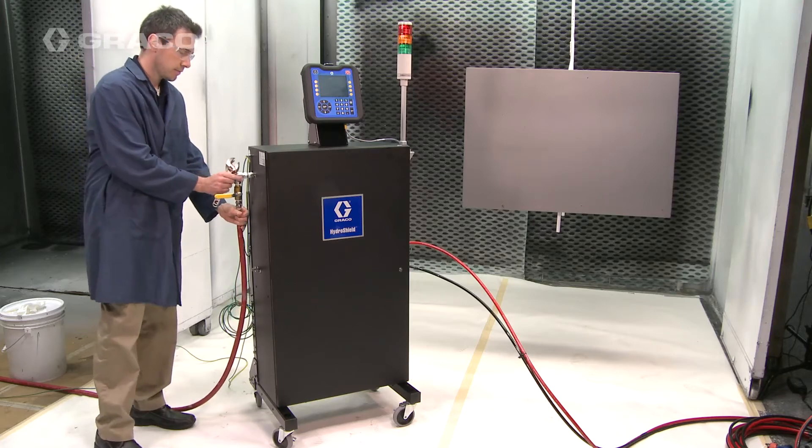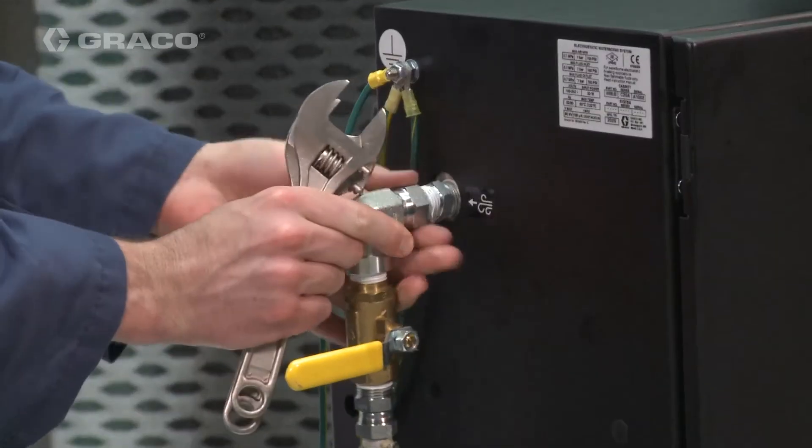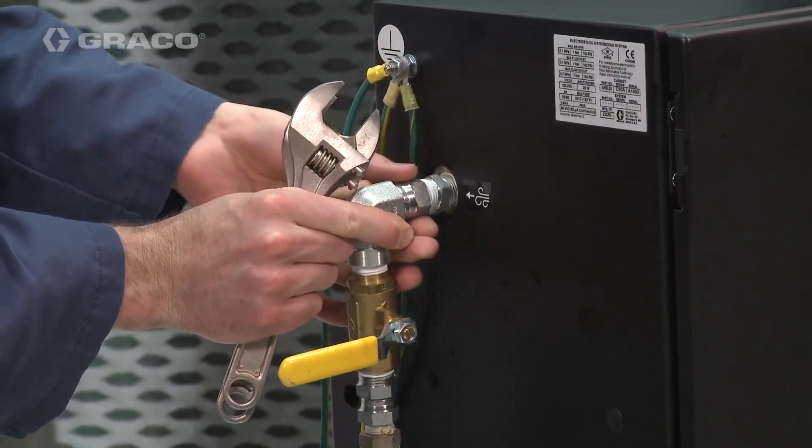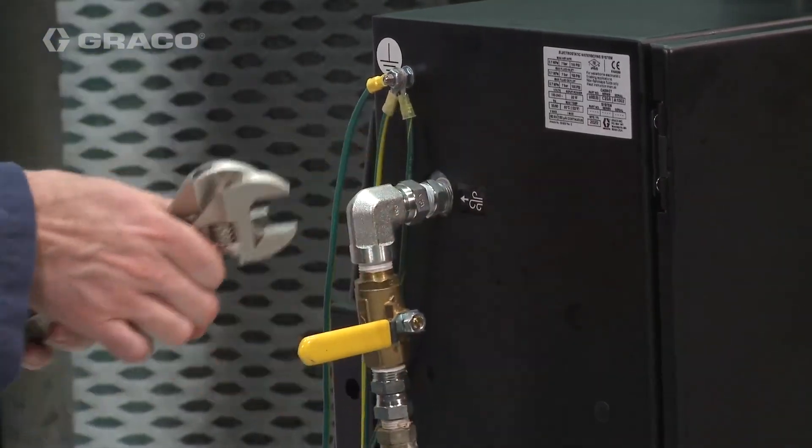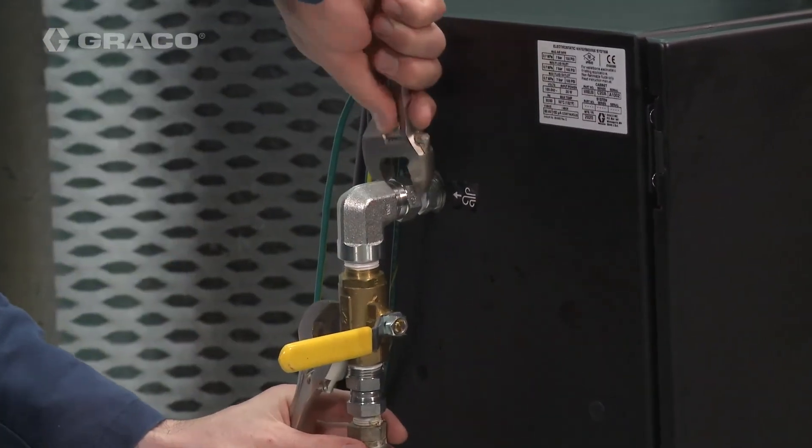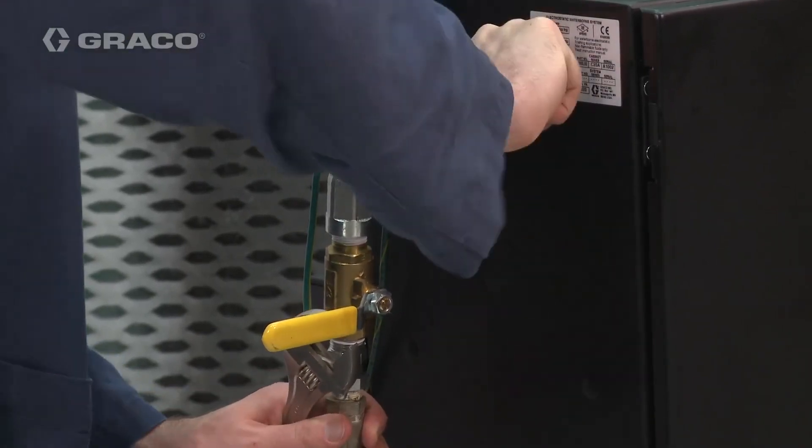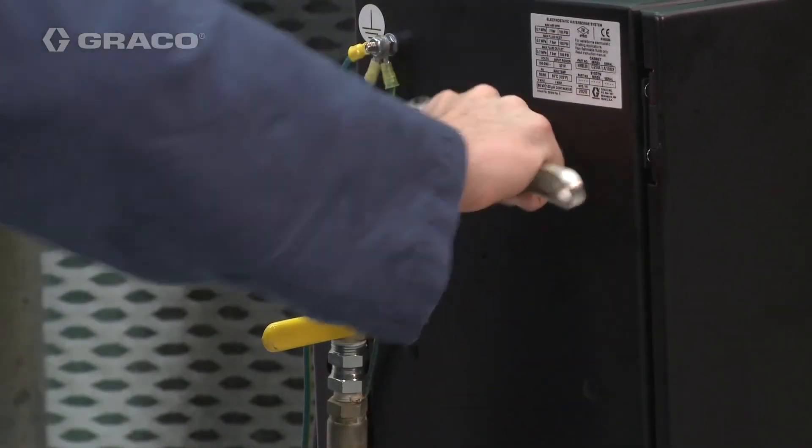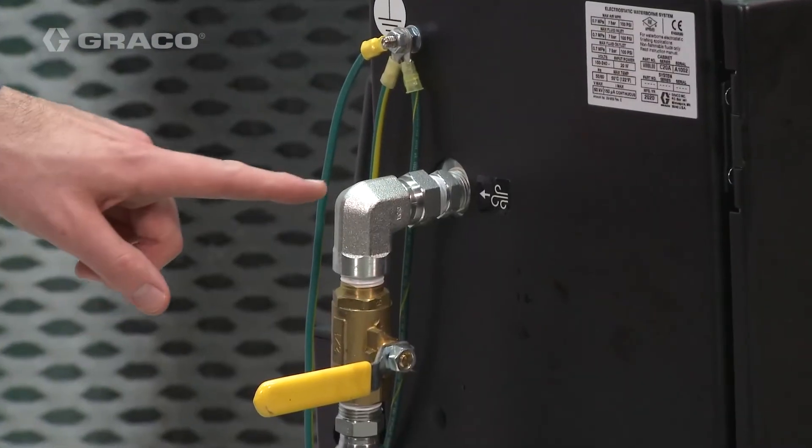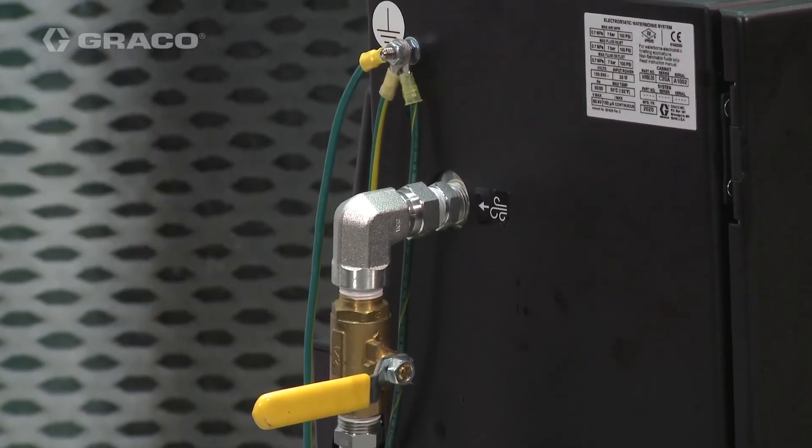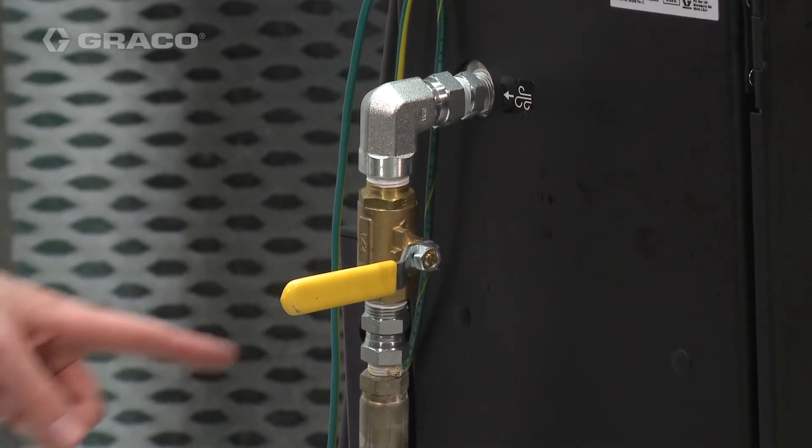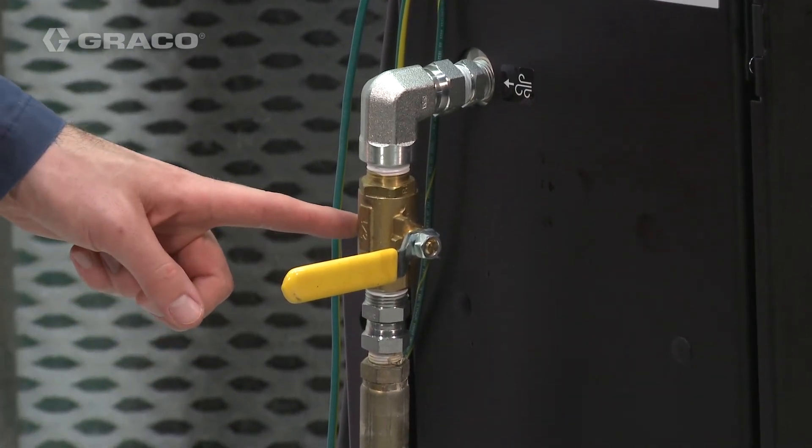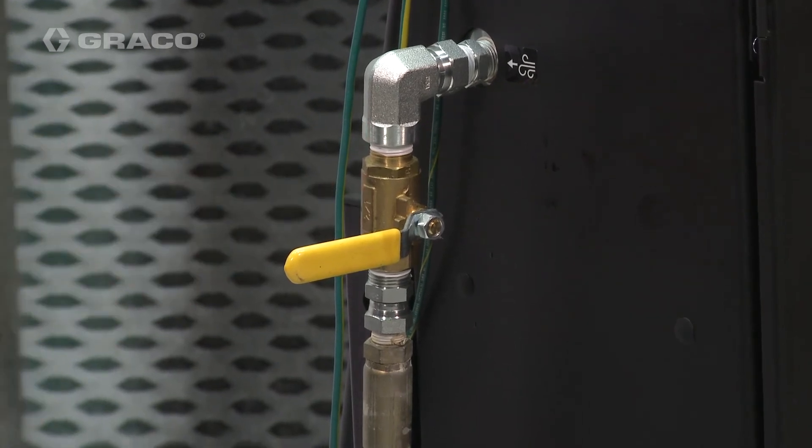Connect the air supply hose to the cabinet. The maximum air pressure is 100 psi. The minimum required air pressure is 70 psi. For the best performance, use an air supply hose with a minimum of 3/8 inch diameter and avoid quick disconnect connectors. Install a bleed type air valve near the cabinet to easily turn off the air supply during installation or service.